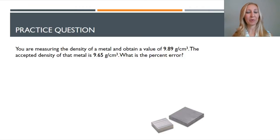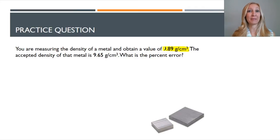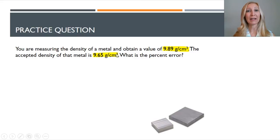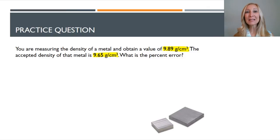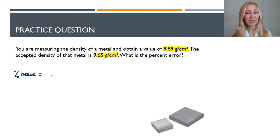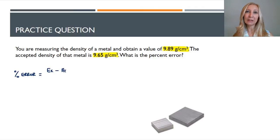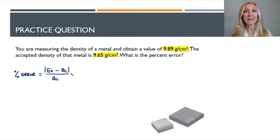Let's take a look at a practice example. You're measuring the density of a metal and you get a value of 9.89 grams per cubic centimeter — this is the experimentally determined value, your measured value. You're going to compare that to the accepted density of the metal, which is 9.65 grams per cubic centimeter. What is the percent error? Our percent error calculation is equal to the experimental value minus the accepted value in absolute value symbols, over the accepted value, multiplied by 100% to turn that fraction or decimal into a percentage.